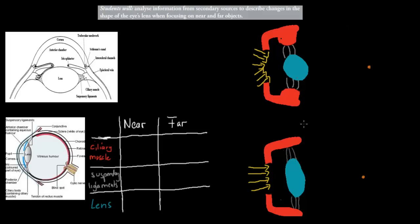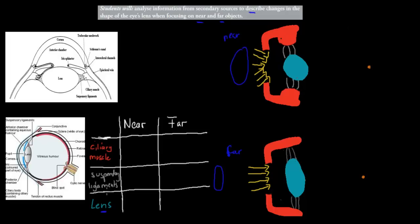Much of this content has been covered in past videos, but we'll go over it again quickly. This dot point says students will analyze information from secondary sources to describe changes in the shape of the eye's lens when focusing on near and far objects. We're going to talk about the shape of the lens, but also the suspensory ligaments and the ciliary muscles.